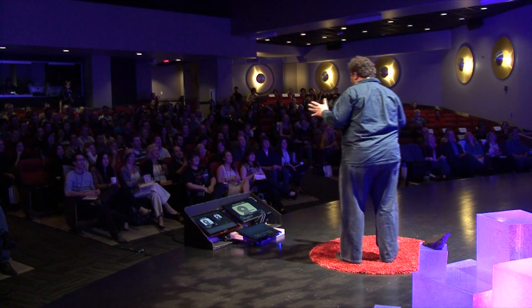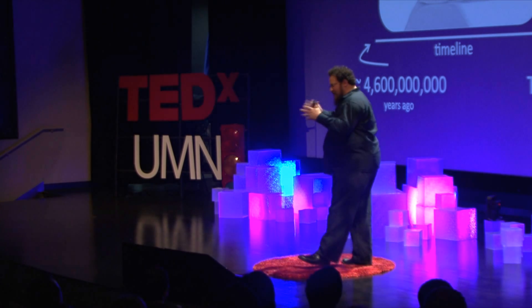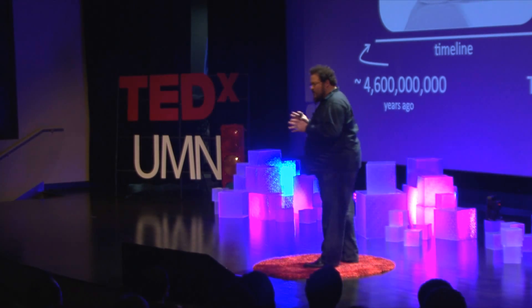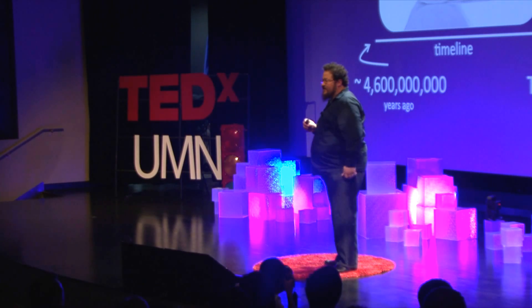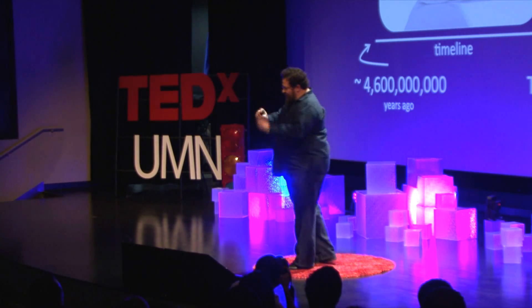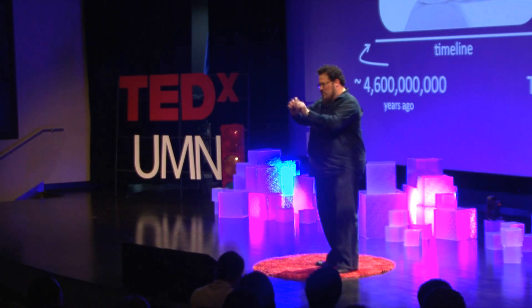Imagine you're here at the very edge of the toilet paper, and the little cardboard thing at the center is the beginning of our planet. About a thousand squares of toilet paper exist on this roll, which means each square is about 4.6 million years. If you take the first square and rip off about a quarter of it, this contains everything that humans have done on our planet. We're essentially just a tiny piece of the toilet paper roll.